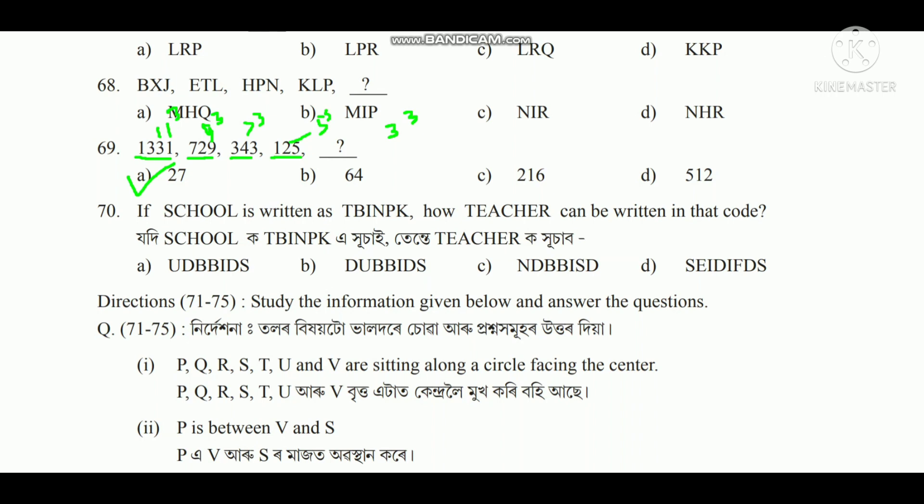Question number 17: If SCHOOL is written as T, B, I, N, K, P, K — how can TEACHER be written in that code? This is SCHOOL.